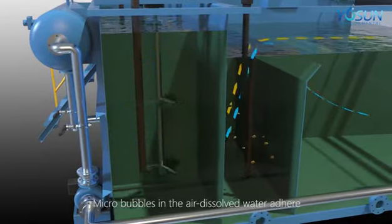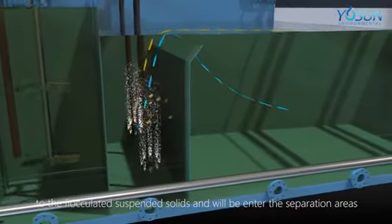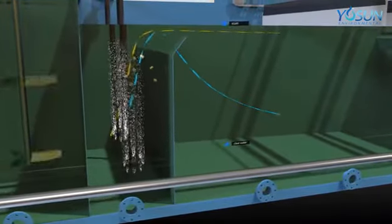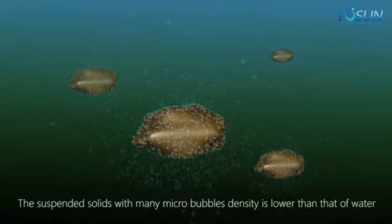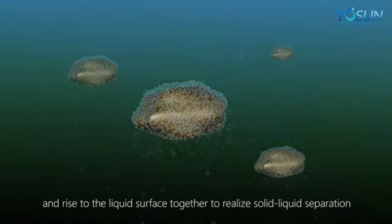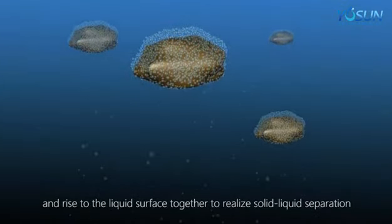Microbubbles in the air dissolved water adhere to the flocculated suspended solids and enter the separation areas. The suspended solids with many microbubbles have density lower than water and rise to the liquid surface together to realize solid-liquid separation.